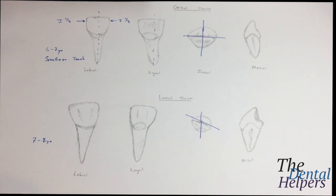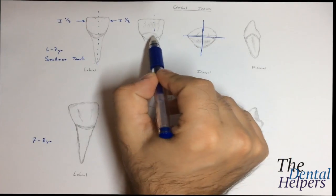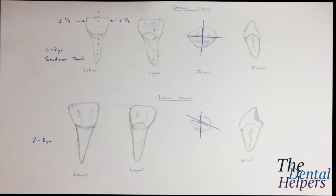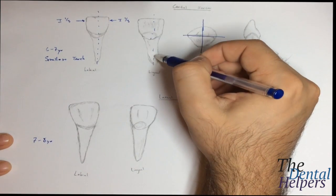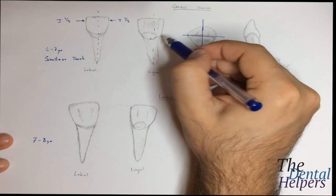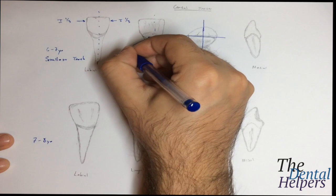And with all of the incisors, again, they do have three mamelons present, and a cingulum, which all attributes to the developmental lobes, being that there's four developmental lobes. The cingulum is centered on the root axis, I kind of drew it poorly here, but it is supposed to be centered. So we're going to write that.